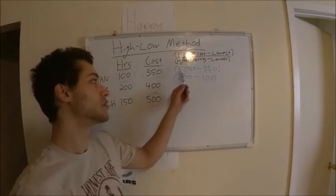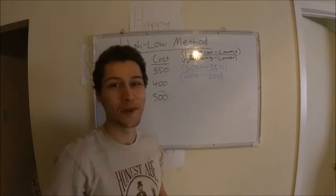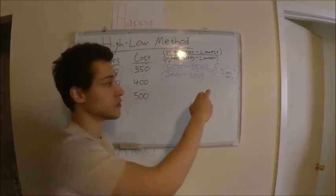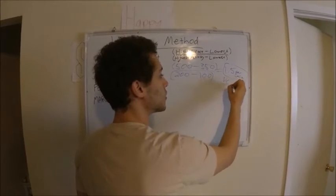And so when you do this make sure to subtract before you divide, order of operations. So 1.5 is your variable cost per unit.